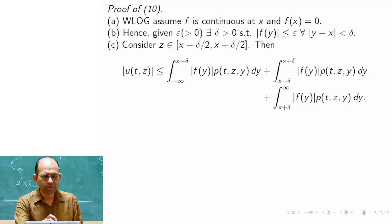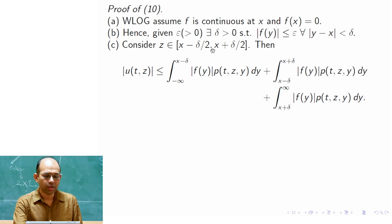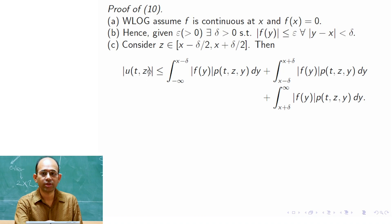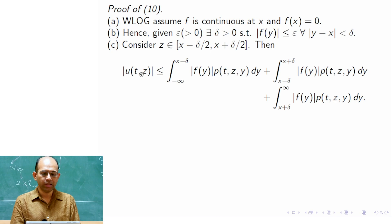We consider point z in a smaller neighborhood of x, specifically the δ/2-neighborhood. Our goal is to show that |u(t,z)| → 0 as t → 0 and z → x. Since u(0,x) = f(x) = 0, showing u is continuous at x means showing that for t very small and z close to x, |u(t,z)| is very small and converges to 0.